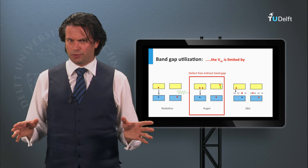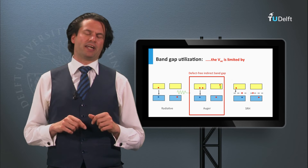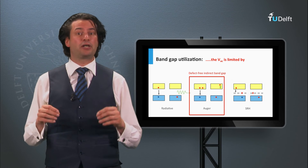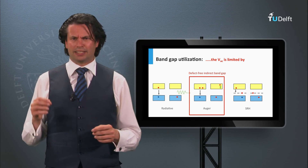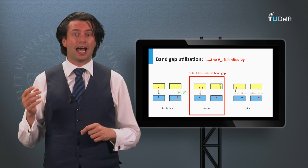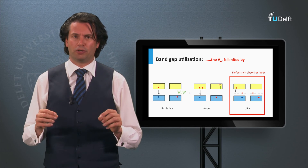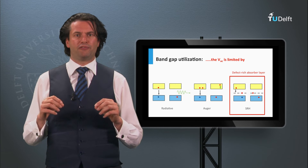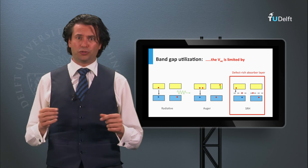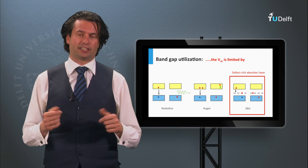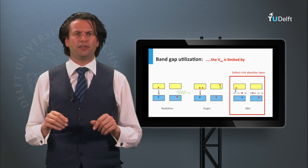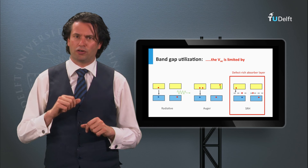Let's consider the last design rule: the utilization of the band gap energy. As discussed in week 3, band gap utilization is determined by recombination losses. As silicon is an indirect band gap material, only Auger recombination and Shockley-Reed-Hall recombination will determine the open-circuit voltage. Considering Shockley-Reed-Hall, the recombination of charge carriers is related to electrons trapped at defect states.